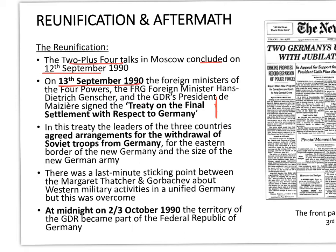The foreign ministers of the four powers — Britain, France, America, the USA — plus the foreign ministers of West Germany and East Germany, de Maizière himself, signed the treaty. Six signatures went on to that treaty. In it, the leaders agreed arrangements for the withdrawal of Soviet troops from Germany, the eastern border of the new Germany, and the size of the new German army. There was a last-minute sticking point — almost out of spite, Thatcher raised a few objections and Gorbachev was a little awkward — but it was quickly overcome.